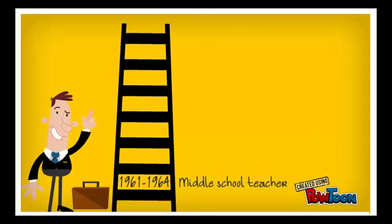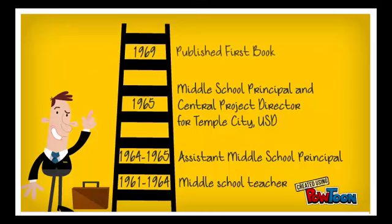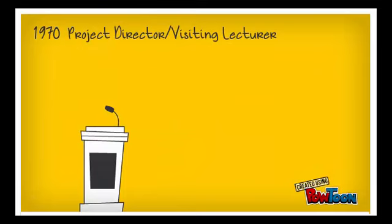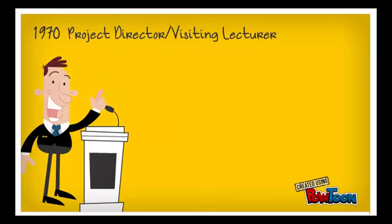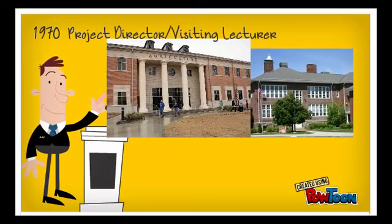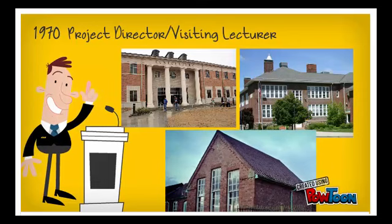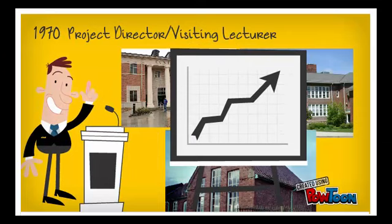He quickly moved through the ranks as he became a middle school teacher, then assistant principal, finally middle school principal, and central project director for Temple City USD. It was during his five years in these positions that he wrote his first book titled Differentiated Staffing, Giving Teaching a Chance to Improve Learning. In 1970, he was asked to be a project director and visiting lecturer for a project funded by Arizona State University. Fenwick was allowed to reorganize three pilot schools in the Mesa School District along slightly different models and then measured performance differences. There was clear improvement, and the time in these schools allowed him to do his practical research, which he would later turn into his dissertation, completed in 1972.